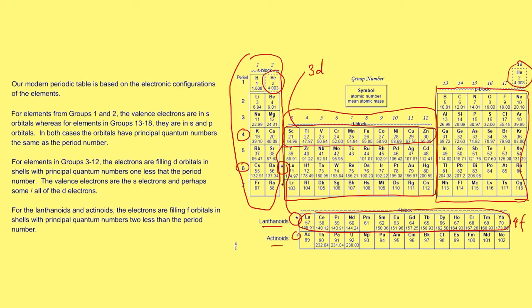Similarly with the actinoids — they squeeze in here in the seventh period. Again that's an f subshell, but in this case it's going to be seven minus two, which is five, so they're filling in the 5f subshell. Notice we've got uranium here, which is the largest naturally occurring element, even though quite a bit smaller than Oganesson, which is the largest atom ever created.